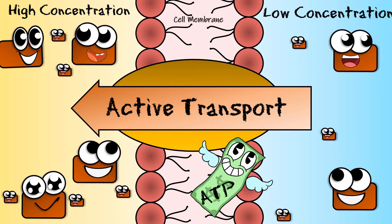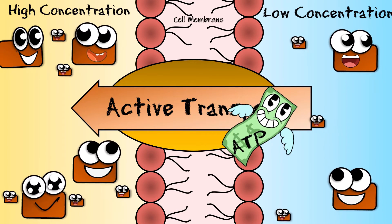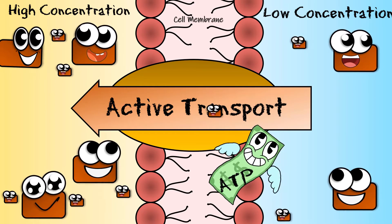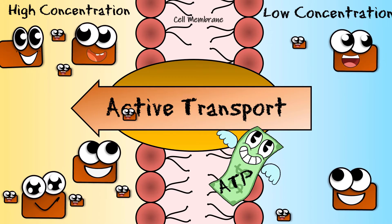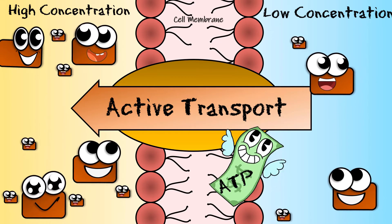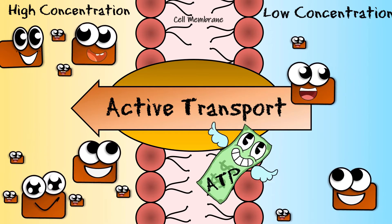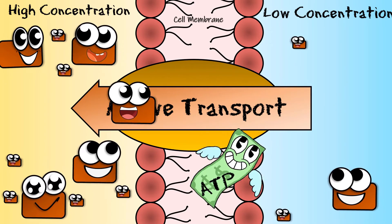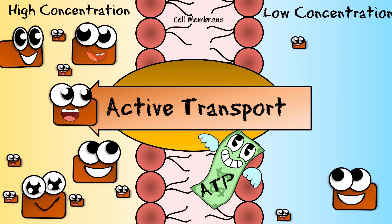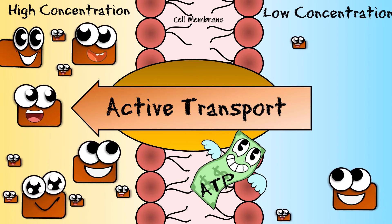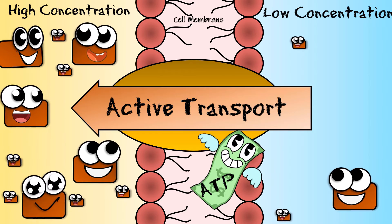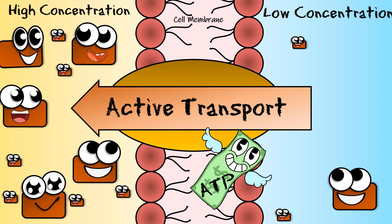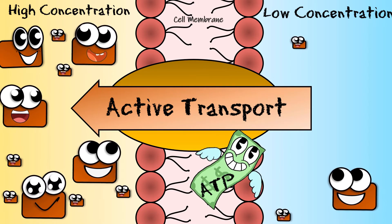Sometimes the cell wants to transport molecules from a lower concentration to a higher concentration. Since it cannot happen naturally, the cell must spend energy in terms of ATP molecules for the transport. This type of transport is called active transport.